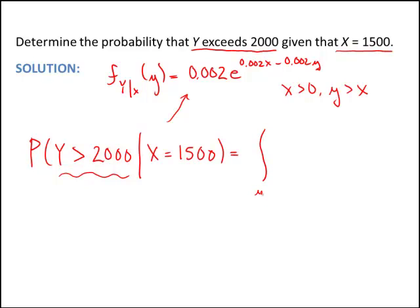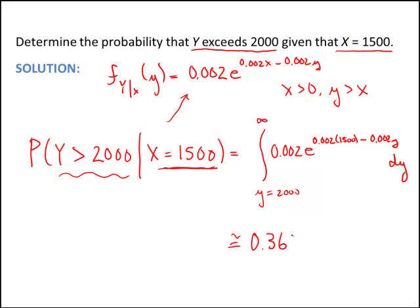This is going to be from y 2,000 to infinity given x is 1,500. So this is 0.002 e to the 0.002 times 1,500, since we're given this x, minus 0.002y, and this is going to be dy. I already went ahead and determined this before I made the video, and this is approximately 0.368.